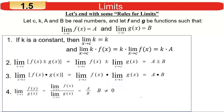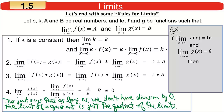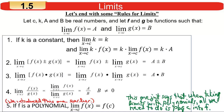Rule 4: same as with the product, but for quotients — with the caveat that you can't divide by zero. The limit of a quotient is the quotient of the limits, as long as you're not dividing by zero. So if the limit of f as x→4 is 16 and the limit of g is 8, the limit of f divided by g is 16 divided by 8. Rule 5 — and we've been using this already — if f is a polynomial, the limit of f as x approaches c is just what you get by plugging c in.